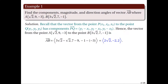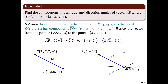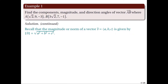Geometrically, vector AB is the directed line segment from point A to point B in three-dimensional space. It can also be represented by its position representation — the equivalent vector whose initial point is the origin and whose terminal point has coordinates equal to the components of the vector. Recall that the magnitude is the principal square root of the sum of the squares of the components.